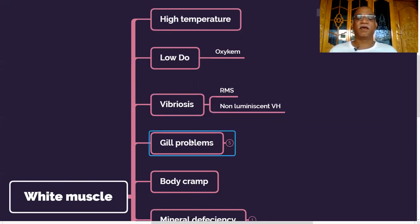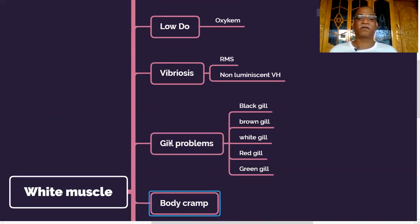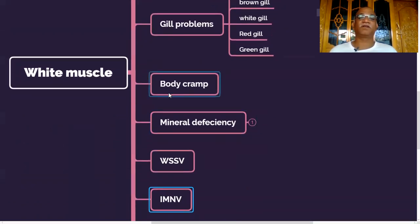And gill problems - all the gill problems cause white muscle. The main function of the gill is to transfer dissolved oxygen from the water to the hemolymph or the blood cells. There are several gill problems: black gill, brown gill, white gill, red gill, green gill. Whatever may be the problem, you will find white muscle if you have gill problems because oxygen supply will not be there, especially in the distal parts of the body.